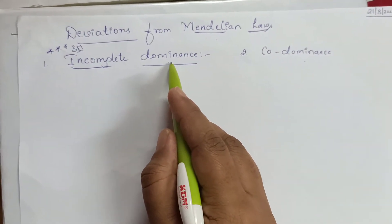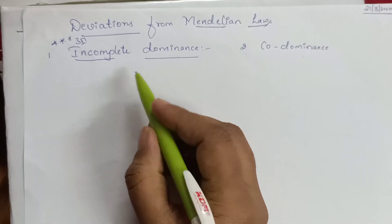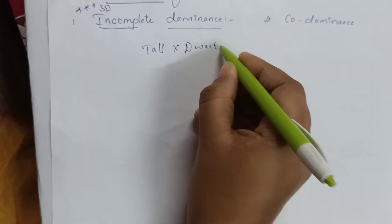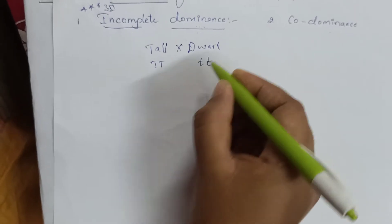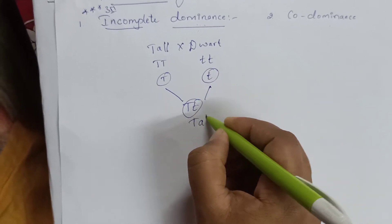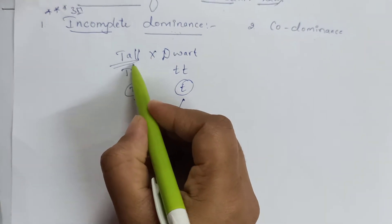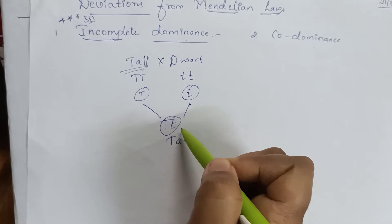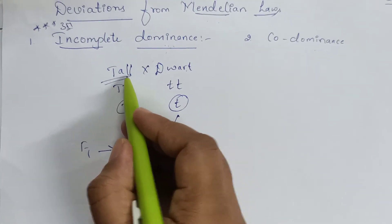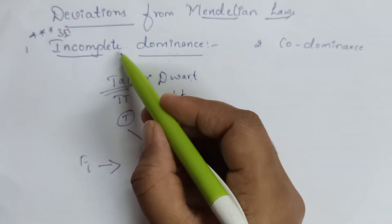We know that the definition of dominant character: a dominant character means the character that gets expressed in the F1 generation. Suppose if we take tall and dwarf characteristics, the character that gets expressed in the F1 generation will always be the dominant one. The dominant character has the capacity to suppress other characters and express itself in the first generation.